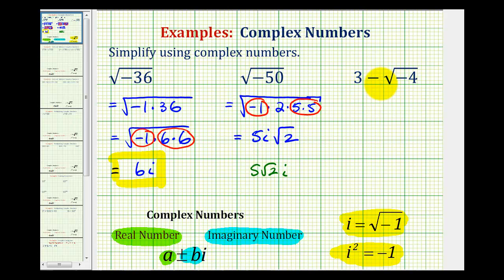Next we have 3 minus the square root of negative 4. We can write this as 3 minus the square root of negative 1 times 4, and 4 equals 2 times 2. This perfect square factor will simplify, and the square root of negative 1 simplifies to i. So this becomes 3 minus 2i.